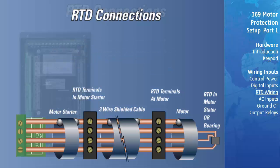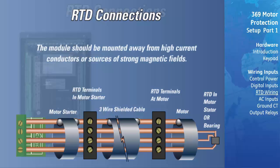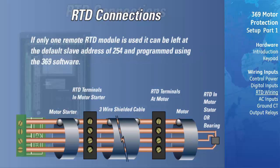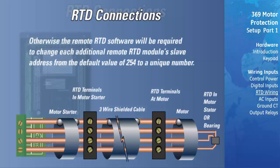The optional remote RTD module is designed to be mounted near the motor, eliminating the need for long runs of RTD cabling. Although the module is internally shielded to minimize noise pickup and interference, it should be mounted away from high current conductors or sources of strong magnetic fields. If only one remote RTD module is used, it can be left at the default slave address of 254 and programmed using the 369 software. Otherwise, the remote RTD software will be required to change each additional remote RTD module slave address from the default value of 254 to a unique number.